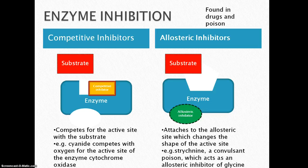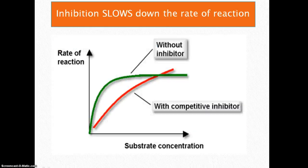Both prevent the substrate from binding with the enzyme. An example of a competitive inhibitor is cyanide, and an example of an allosteric inhibitor is strychnine. Both are found in drugs and poisons. Inhibition slows down the rate of reaction.